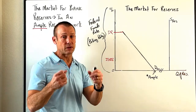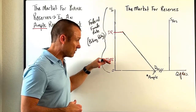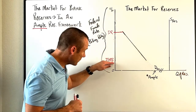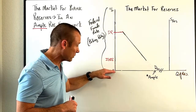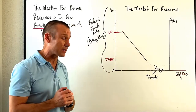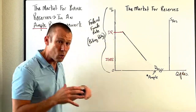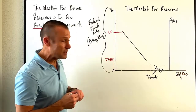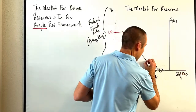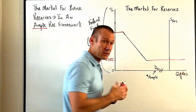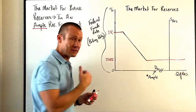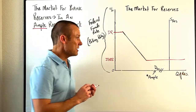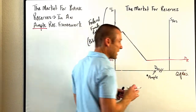No commercial bank will lend in the federal funds market at a rate below the interest they could earn by just keeping reserves at the Fed. So when the Fed sets the IORB at a given level, that portion of the demand curve below it goes away. The remaining demand curve extends horizontally at the IORB level, because banks will hold as many reserves as they can to earn that interest — the Fed paying commercial banks for holding reserves.